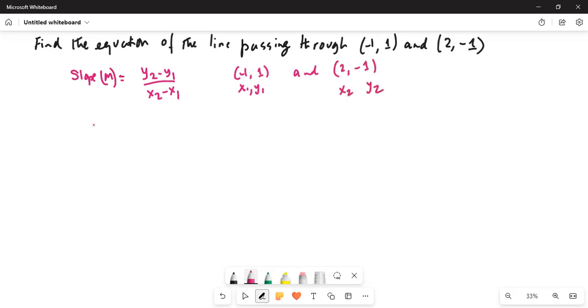So m in this case is y2, which is -1, and then y1, which is just 1. So x1 is -1.